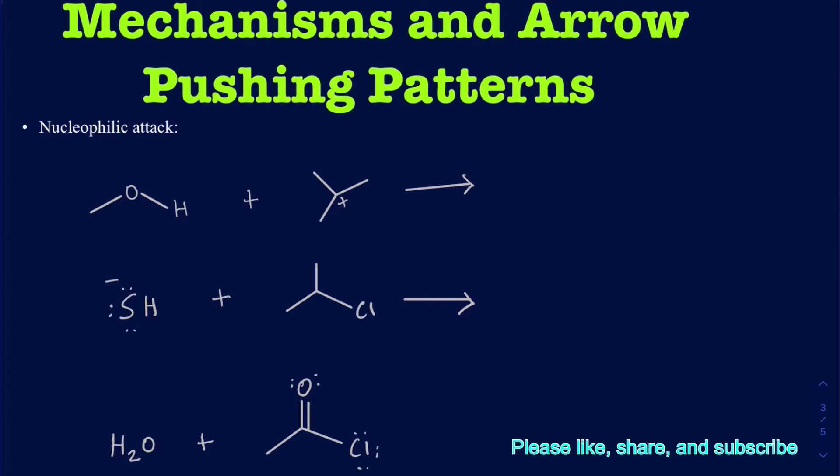Hello, everyone. In this video, we're going to be talking about mechanisms and different patterns of arrow pushing. There are four most common types of arrow pushings, and obviously organic chemistry is not only limited to those four types. You will see other types, but those four arrow pushings are going to be the most common and most important to understand.